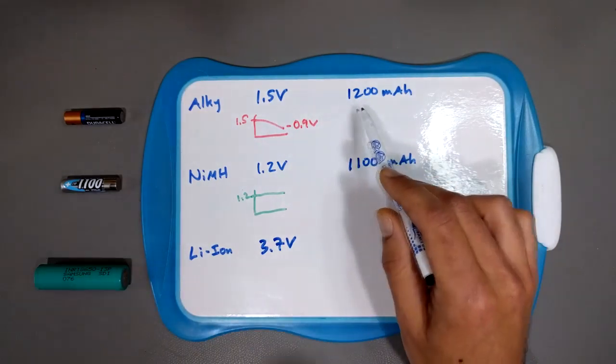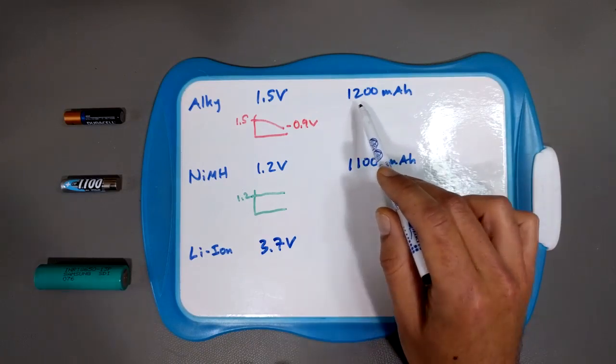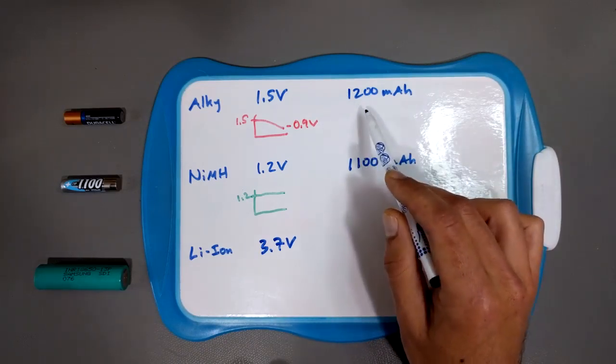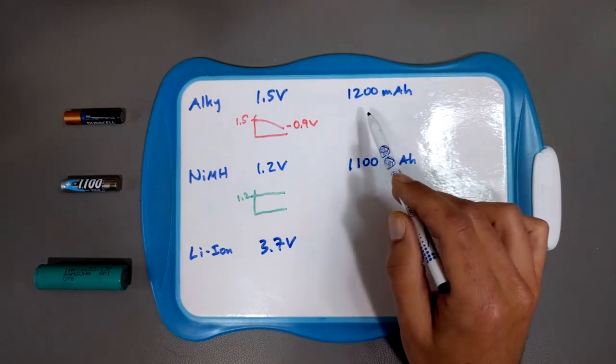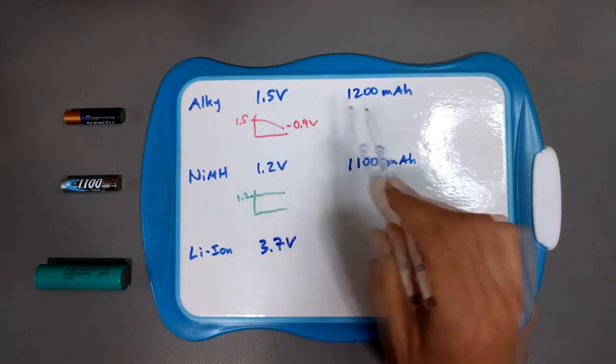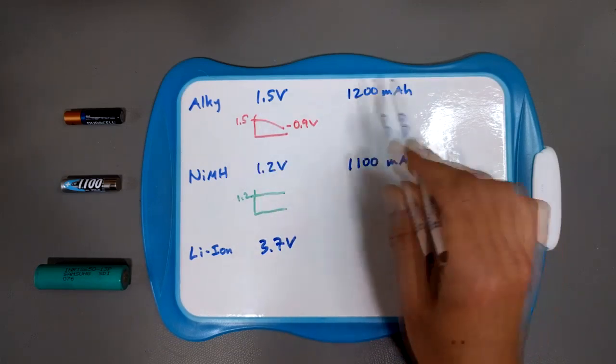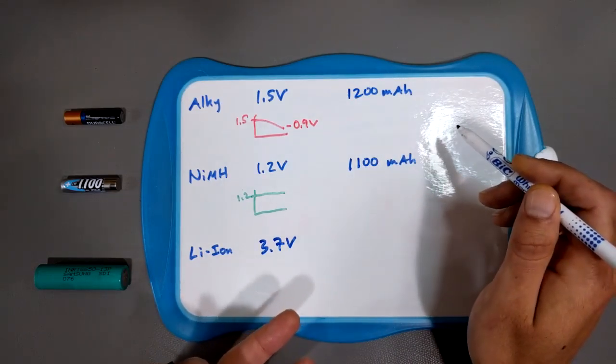Okay, but what about the current? Now, this is where it gets very interesting, because when an alkaline battery is rated at 1,200 milliamp hours, alkaline batteries are designed for low current draw.